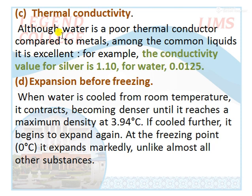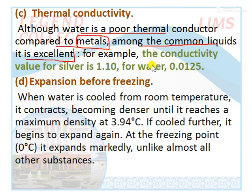Next we discuss thermal conductivity — how well water can conduct heat. Although water is a poor thermal conductor compared to metals, it is an excellent conductor compared to other liquids. For example, the conductivity of silver is 1.1, but water's conductivity is 0.0125. Compared to metals it is a poor conductor, but compared to liquids like alcohols and benzene, it is an excellent conductor.